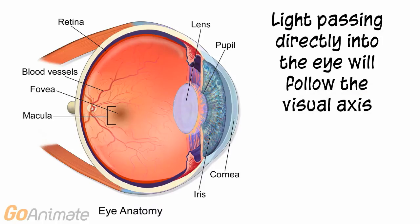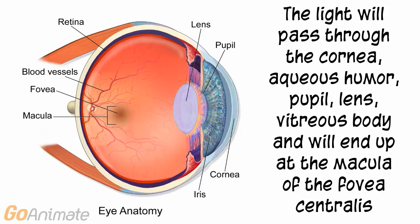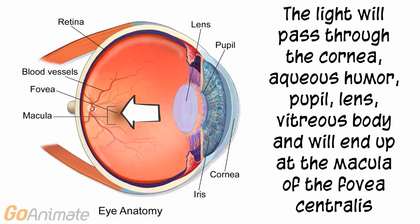The fluid flows around the iris and drains via the scleral venous sinus, or canal of Schlemm. Light passing directly into the eye will follow the visual axis. Light will pass through the cornea.